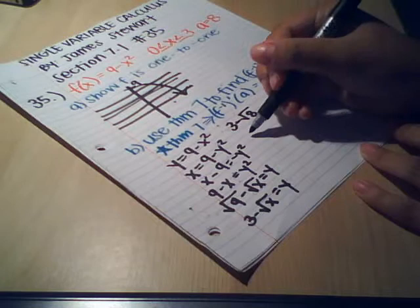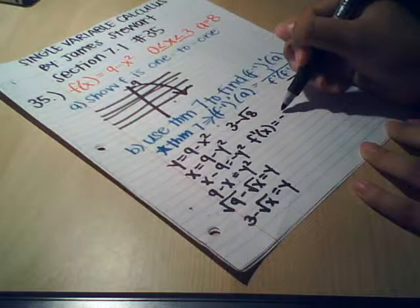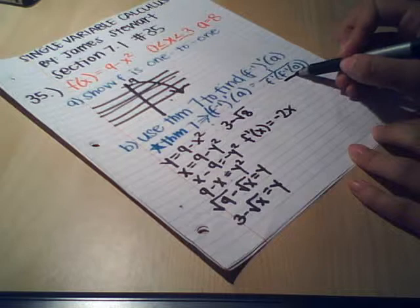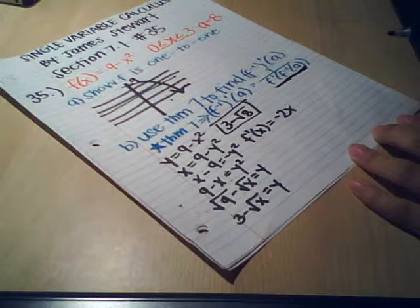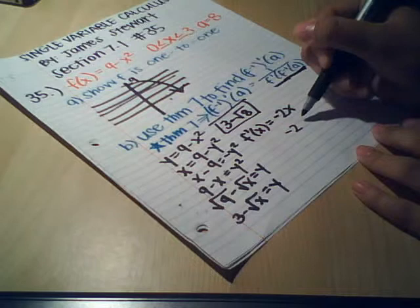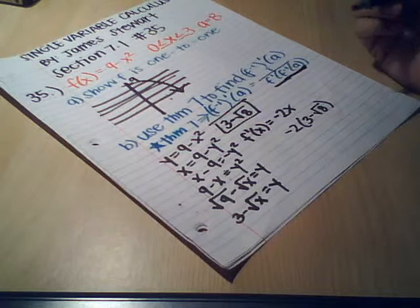And now let's take the derivative of the function. The derivative of the function is just negative 2x. So now we're going to plug this part that we found right here into the derivative. We're going to do that. Negative 2 times 3 minus square root 8.